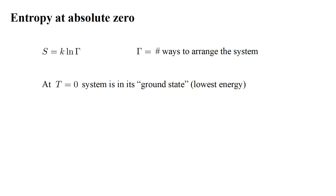Let's return to the central idea of the third law, entropy at absolute zero temperature. According to Boltzmann's principle, the entropy of a system is Boltzmann's constant times the natural logarithm of gamma, where gamma is the number of ways to arrange the system. So, the third law is fundamentally a statement about the number of ways to arrange a system at absolute zero temperature.